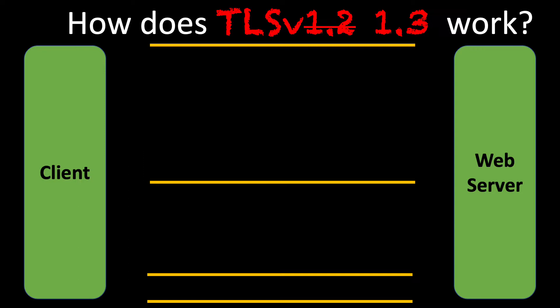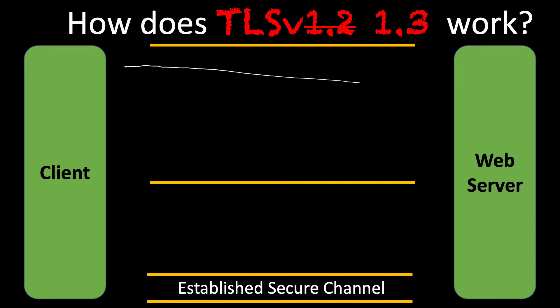First of all, 1.3 is more secure, and I'll explain that in a minute. Our goal is to establish a secure channel. Similar to TLS 1.2, the client is going to send out that hello packet — nothing changes there. However, what does change is that in version 1.2, the client was giving a suite of cipher suites that it was supporting. In this instance, we don't do that. There are no options in TLS 1.3.